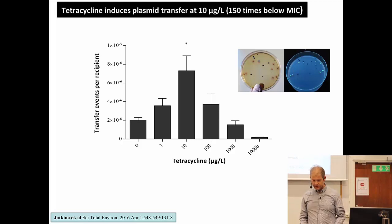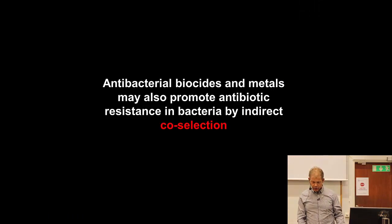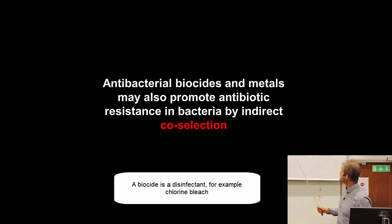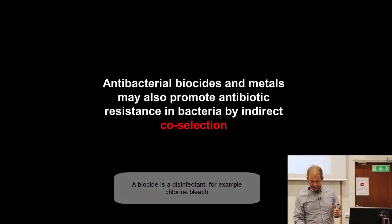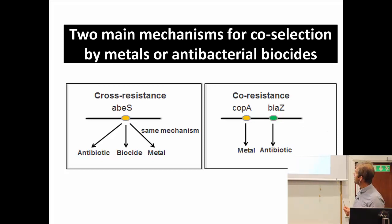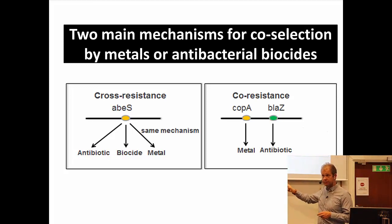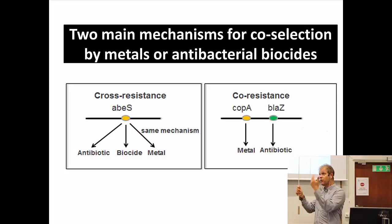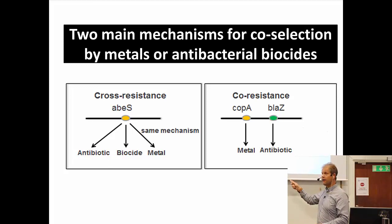That's a bit about concentrations that can drive resistance. We'll also talk about co-selection. Antibacterial biocides and metals may promote antibiotic resistance by what we call co-selection. There are two types: cross-resistance and co-resistance. Cross-resistance is when a gene or protein provides resistance to both antibiotics and a biocide or metal — one gene confers resistance to many things. For example, an efflux pump that can pump out both antibiotics and biocides. If you expose a bacterial community to a biocide, bacteria carrying this pump have an advantage and happen to be antibiotic resistant at the same time.